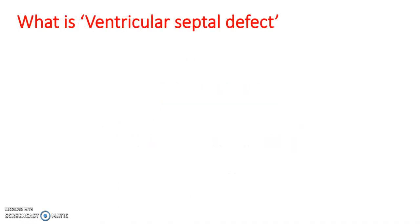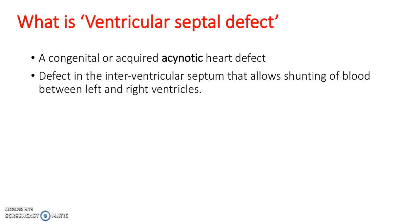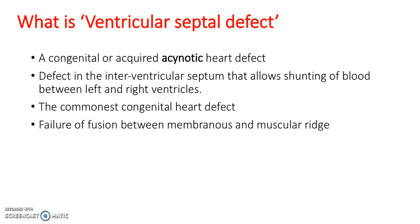What is a ventricular septal defect? It's a congenital or acquired acyanotic heart defect — a defect in the intraventricular septum which allows shunting of blood between the left and right ventricles, instead of out through the pulmonary arteries and the aorta. It's the most common congenital heart defect, and it's due to the failure of fusion between membranes and muscular ridge.